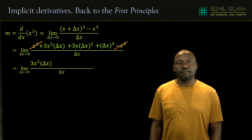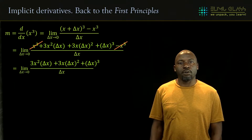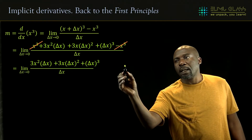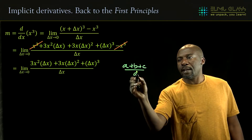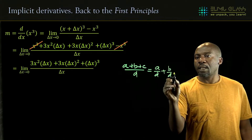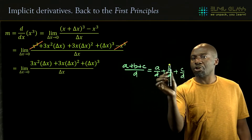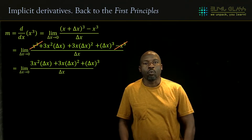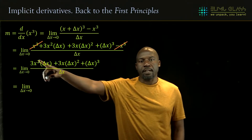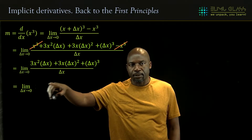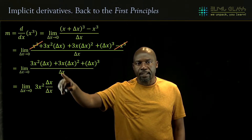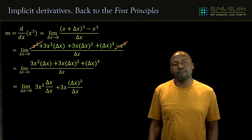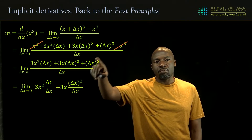Let's simplify those three remaining terms. We split the fraction into three parts, because a plus b plus c divided by d equals a/d plus b/d plus c/d. Applying the same idea here, we get 3x squared times delta x over delta x, plus 3x delta x squared over delta x, plus delta x cubed over delta x.